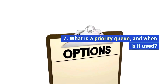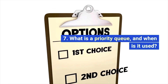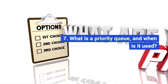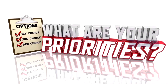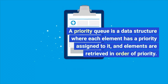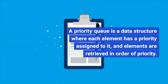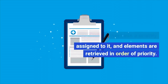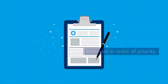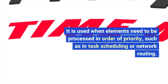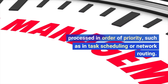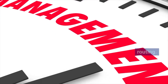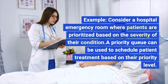The next question is: what is a priority queue and when is it used? A priority queue is a data structure where each element has a priority assigned to it and elements are retrieved in order of priority. For example, consider a hospital emergency room where patients are prioritized based on the severity of their condition.